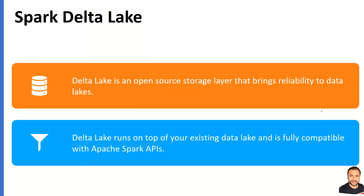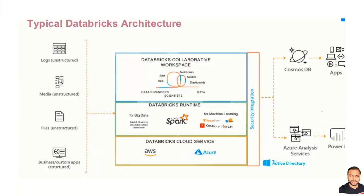From a definition perspective, Delta Lake is an open-source storage layer that brings reliability to your read and write transactions with external distributed storages. Delta Lake beautifully sits on top of your existing data lakes — HDFS, S3, blobs, etc. — and is absolutely compatible with existing Spark APIs. With Spark 3, the APIs available at the core SQL and other components are fully compatible with the Delta Lake solution.